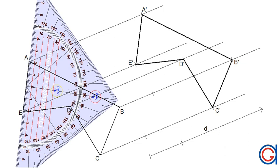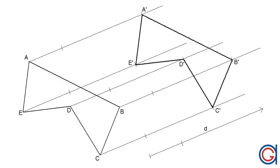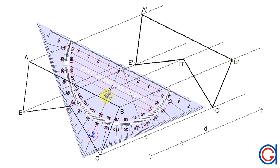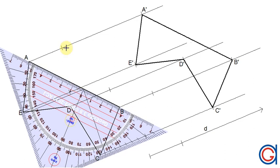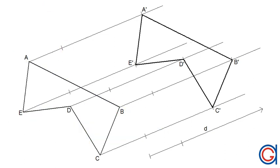Now we're just checking to see that they're parallel A prime, E prime and AE. And also A prime, B prime and AB. And as we can see here everything is parallel.